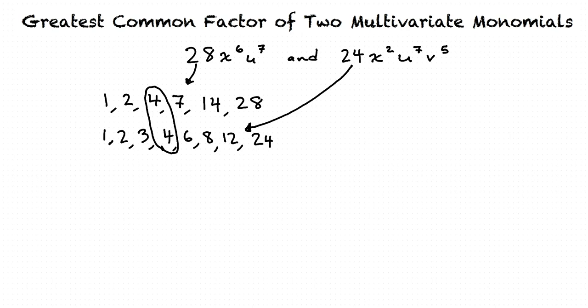We start with the variable x. The expression on the left has x to the sixth, and the expression on the right has x squared. This means that there are two x's multiplied together on the right and six x's multiplied together on the left. So each x is considered to be a factor.